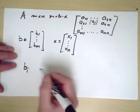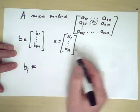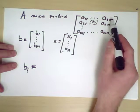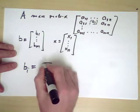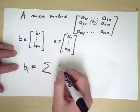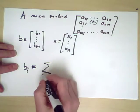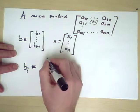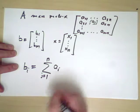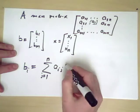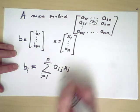So b_i is, well I want to take the i-th row of the matrix A and dot it with the vector x. So I have to count from 1 up to n, and take in the i-th row, take that j-th entry, and multiply it by the j-th entry of x, and add them up.